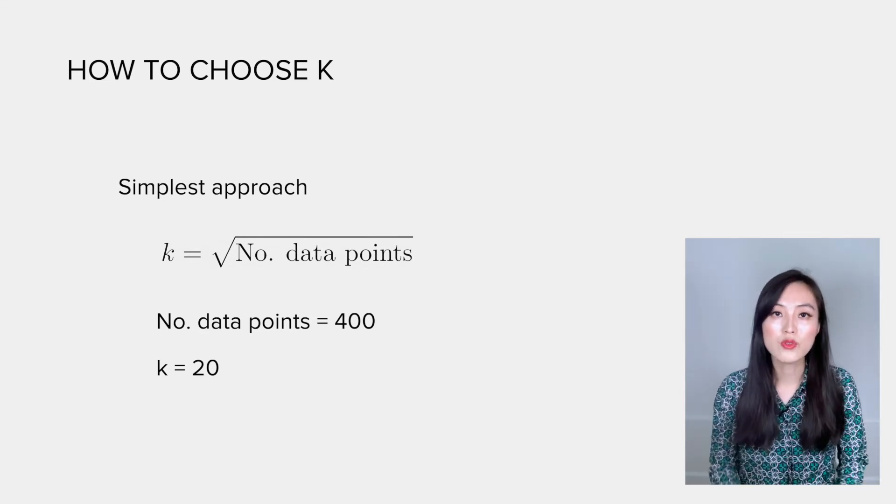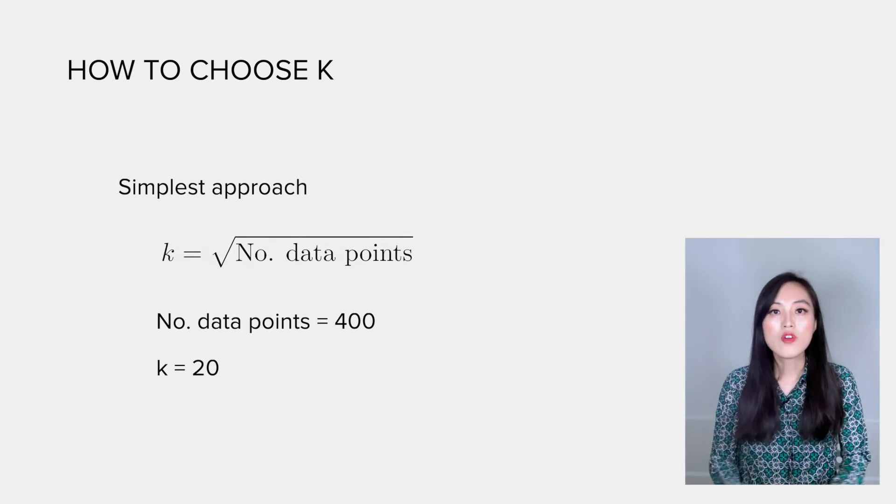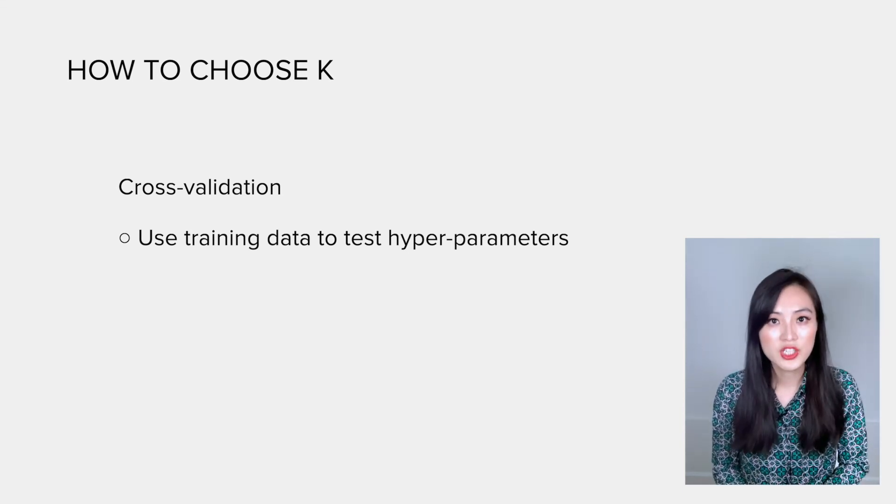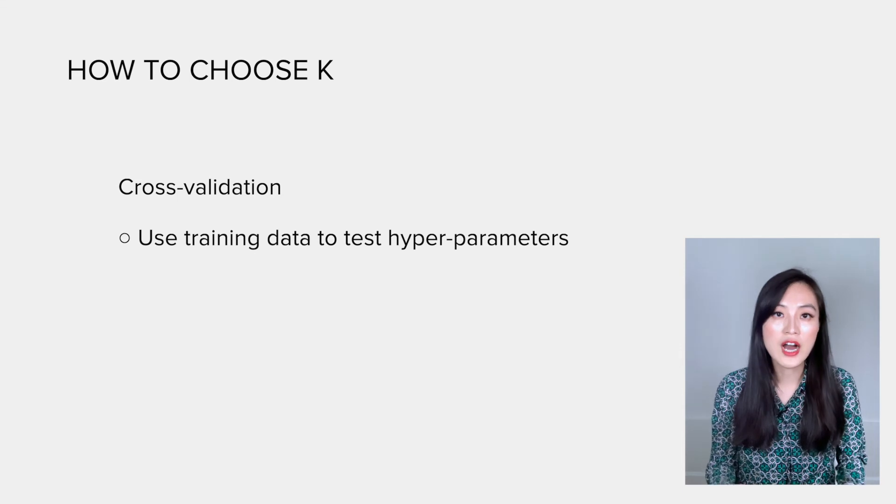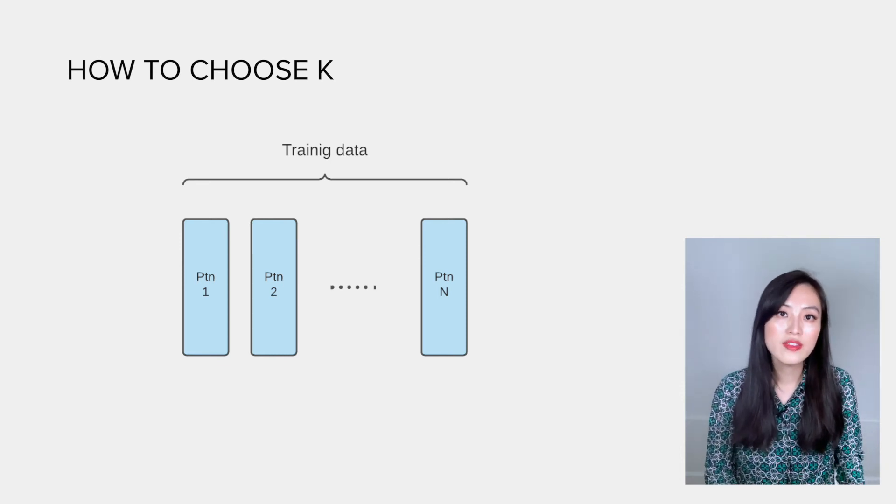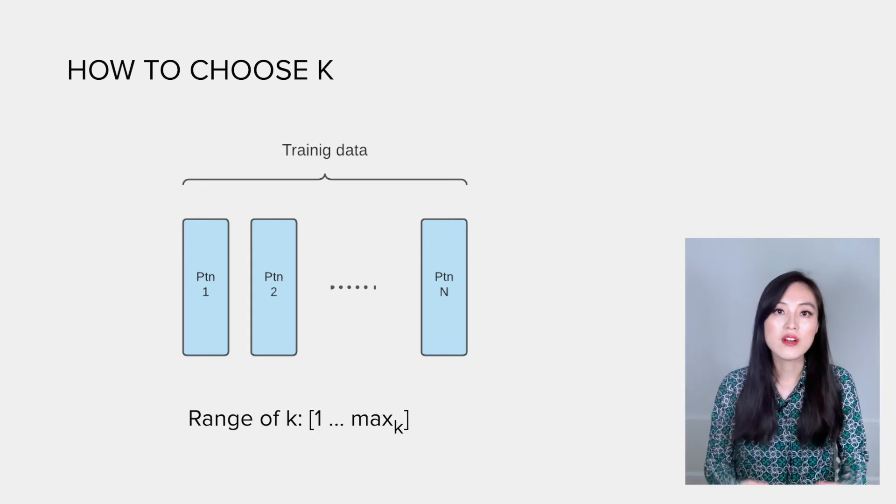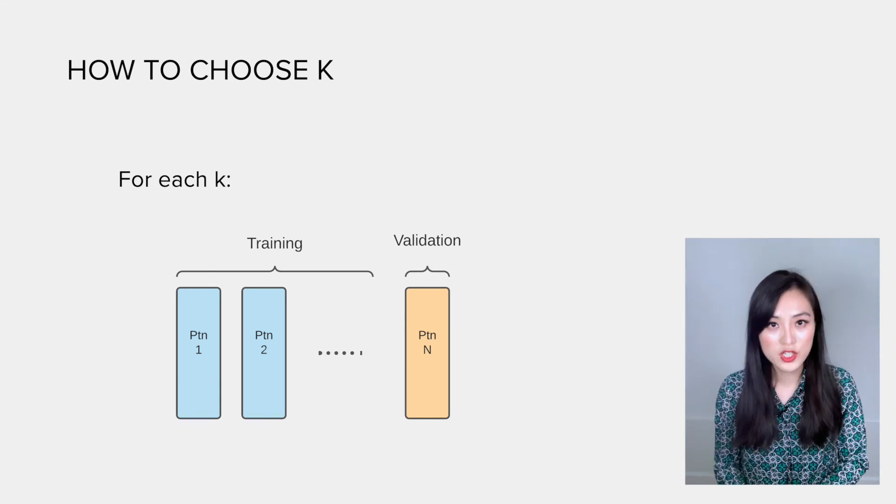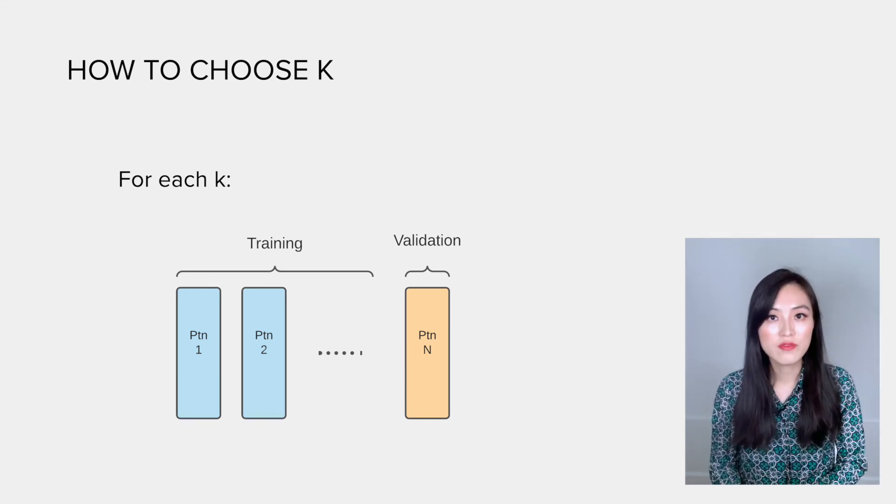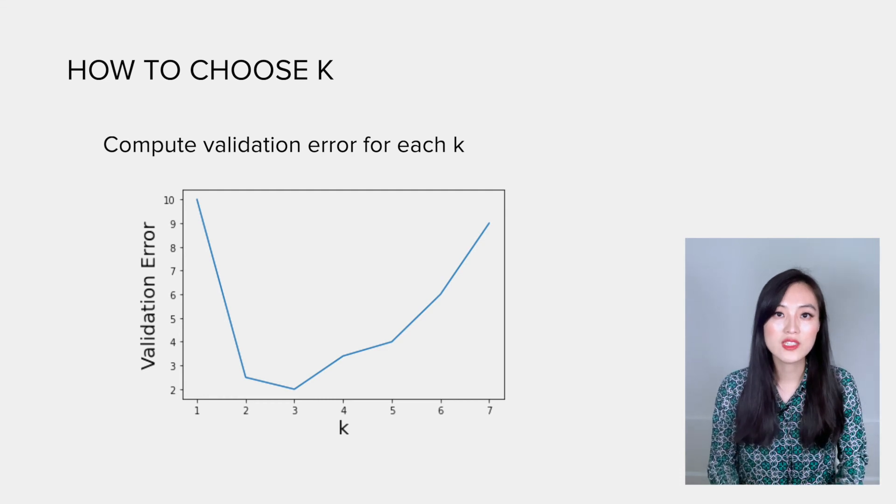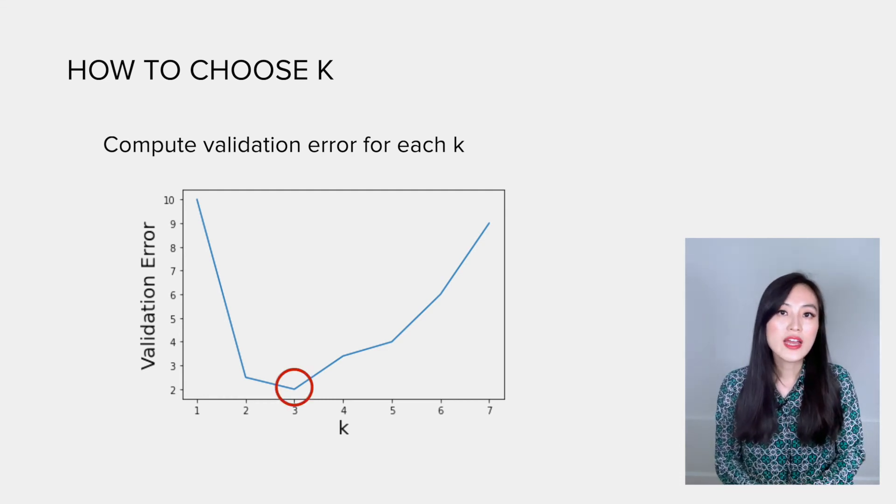This is an empirical value you could use for quick experiments, but for a more rigorous approach, we can use cross-validation to select the optimal k for each specific data set. The goal of cross-validation is to use training data to help us test the choices of hyperparameters in machine learning models. To do that, we shuffle the training data and divide it into N equal-size partitions. Then we pick a range of values we want to select from for the hyperparameter. For each candidate, we use N minus one partitions for training and the remaining one partition for validation. We compute the validation error associated with each candidate, and then we select the one with a minimum error. That's how we can get the optimum value of k.